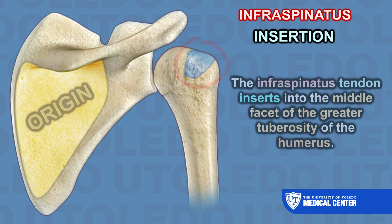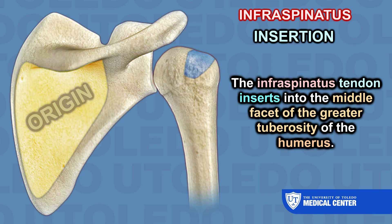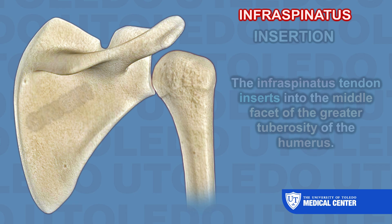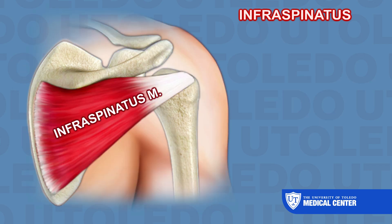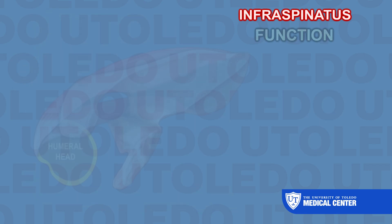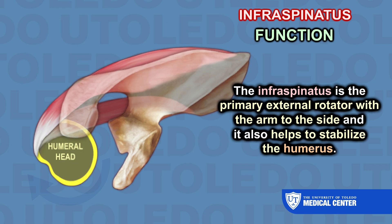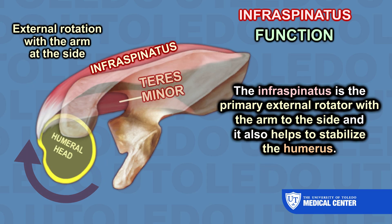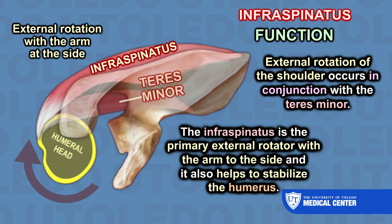The insertion of the infraspinatus tendon is in the middle facet of the greater tuberosity of the humerus. The infraspinatus is the primary external rotator with the arm to the side, and it also helps to stabilize the humerus. External rotation of the shoulder occurs in conjunction with the teres minor.